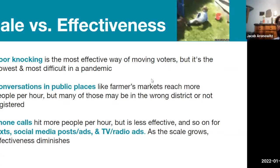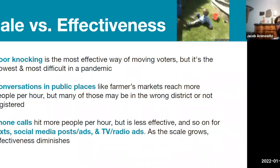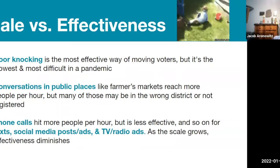Scale versus effectiveness. Door knocking is slow and steady compared to other forms of contact — you can clearly text more people in an hour — but there's strong evidence to suggest it's the most effective way of persuading or moving voters, getting them to change their mind or viewpoint on a set of issues or candidates. Conversations in public can reach more people per hour relative to knocking on a door and in some cases even making dials, but there's no targeting mechanism — the only targeting you have is picking events loosely within the district.